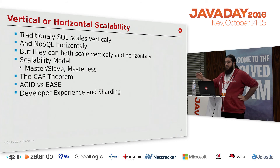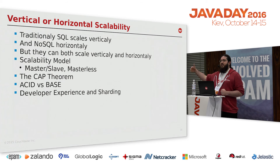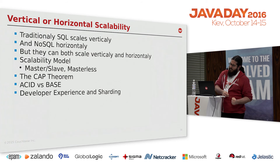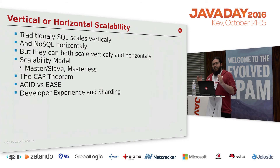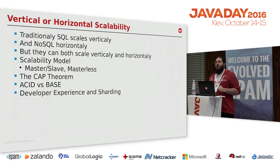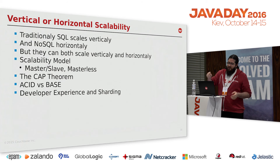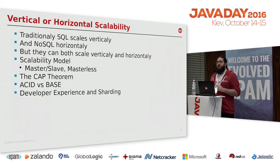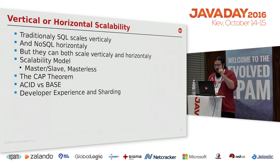Then there's ACID versus BASE. ACID — Atomic, Consistent, Isolated, Durable — means you can do transactions on an RDBMS. NoSQL databases are working on this, but BASE — basically available, soft state, eventually consistent — means no guaranteed consistency and no transaction support. This is still a valid difference: NoSQL databases are adding transaction support, but it's not there yet for all of them.